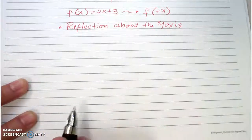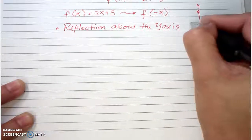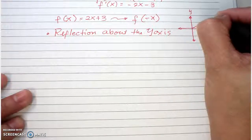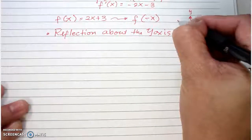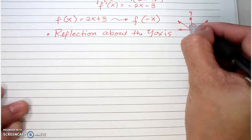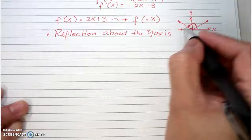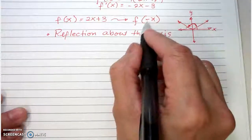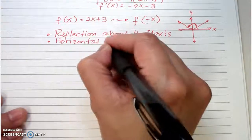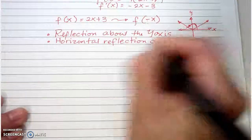Let me explain why: if you have the y-axis and the x-axis and you want to reflect a function, you are reflecting about the y-axis — going back and forth about it because you are reflecting your x-values. So this is a horizontal reflection about the y-axis.